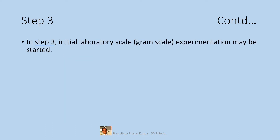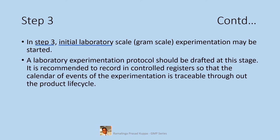In Step 3, initial laboratory scale — that is gram scale experimentation — may be started. There should be a detailed plan of action for laboratory scale experimentation. A laboratory experimentation protocol should be drafted at this stage. It is recommended to record in controlled registers so that the calendar of events of the experimentation is traceable throughout the product life cycle.